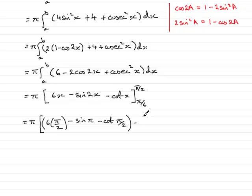And we have minus, put the pi upon 6 through, so we have 6 times pi upon 6, minus the sine of 2 lots of pi upon 6, so that's going to be pi upon 3, minus the sine of pi, and finally minus the cot of pi upon 6.